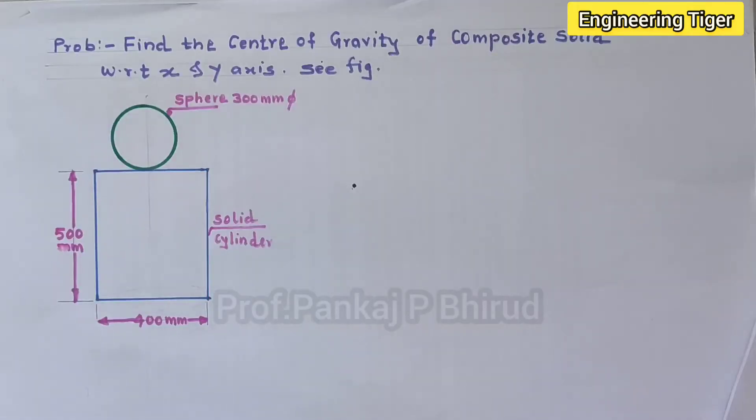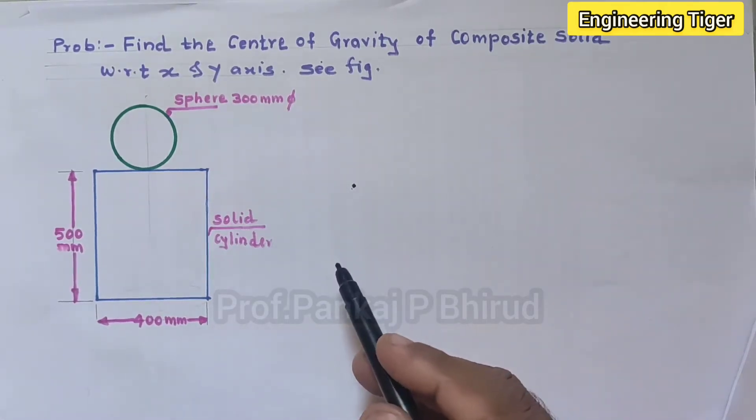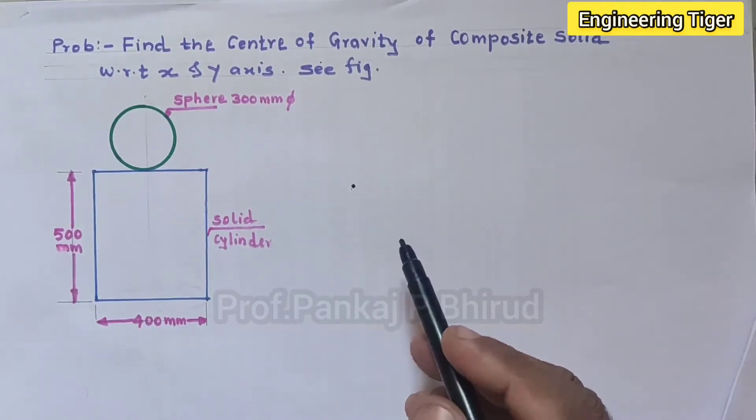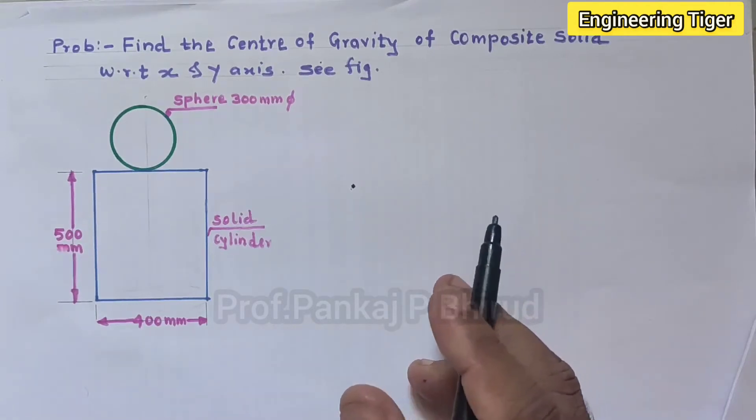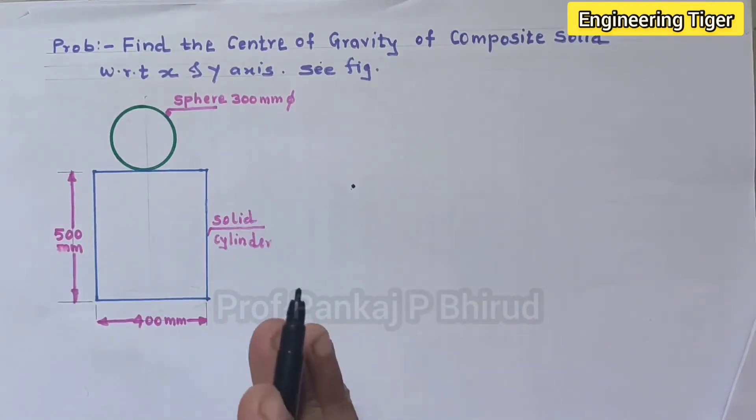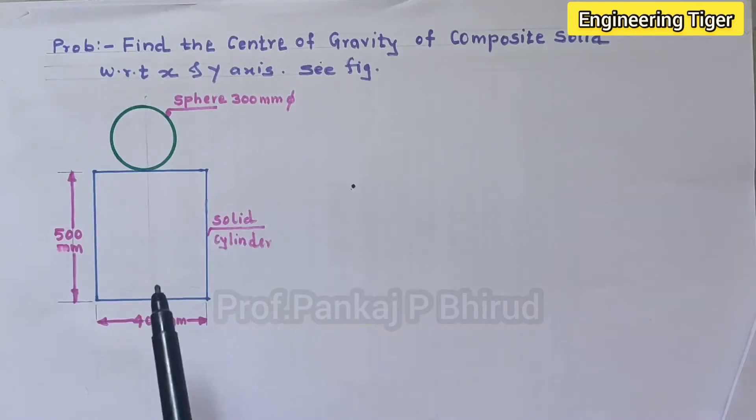Hello my dear friends, today we are going to learn how to find the CG of composite body. In previous video we have discussed and learned how to calculate the CG of cone, sphere, cylinder, hemisphere, cube and cuboid. If you have not seen our previous video please go through it as that video is very important for solving today's problem. The link is given in the description box.